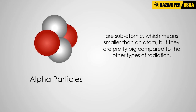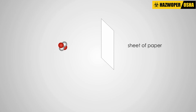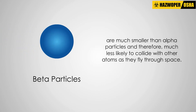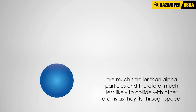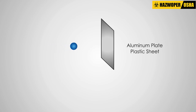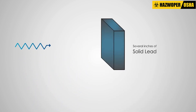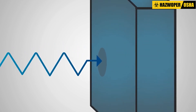Alpha particles are subatomic, which means smaller than an atom, but they are pretty big compared to the other types of radiation. This means that alpha particles do not travel very far, and in fact cannot even get through a piece of paper. Beta particles are much smaller than alpha particles, and therefore much less likely to collide with other atoms as they fly through space. They can travel much further than alpha particles, and it takes several inches of plastic or a sheet of metal to stop them. The big difference between gamma rays and alpha and beta particles is that gamma rays are waves, whereas alpha and beta particles are distinct particles. Gamma rays can travel long distances, and it takes several inches of solid lead to stop them.